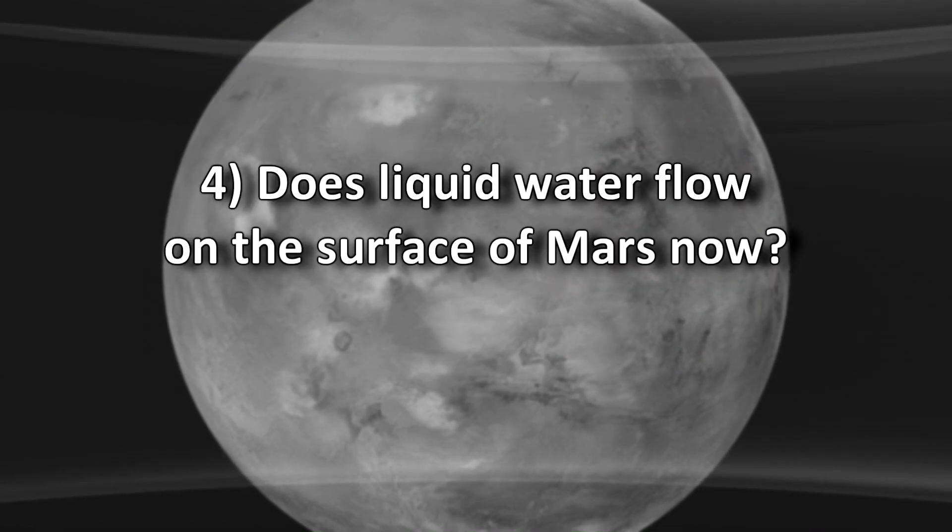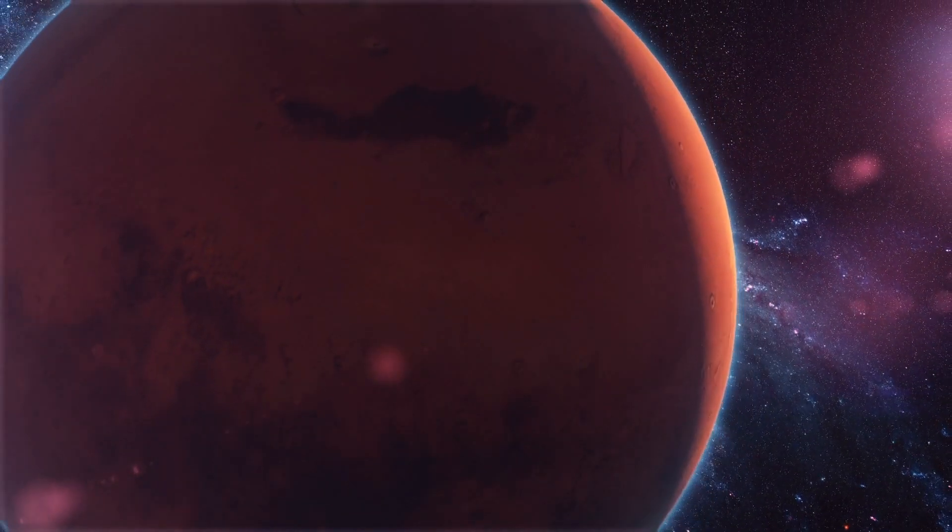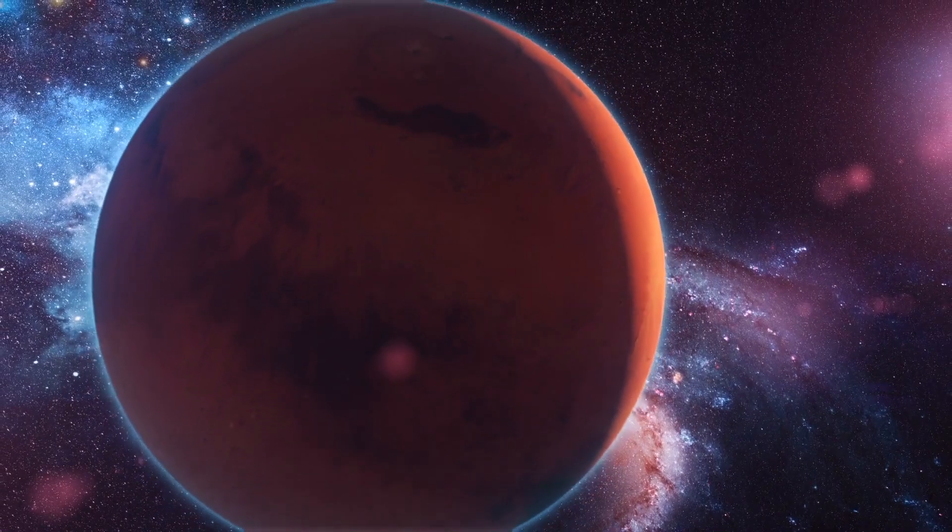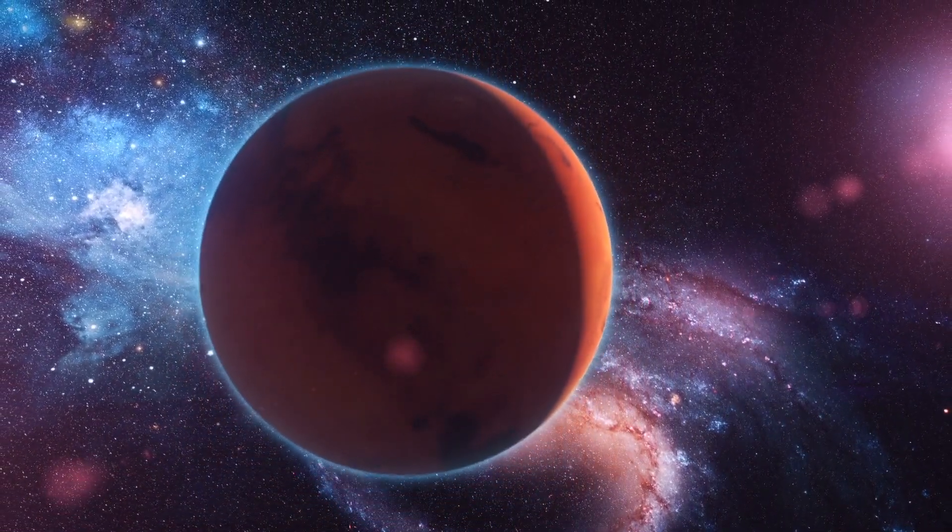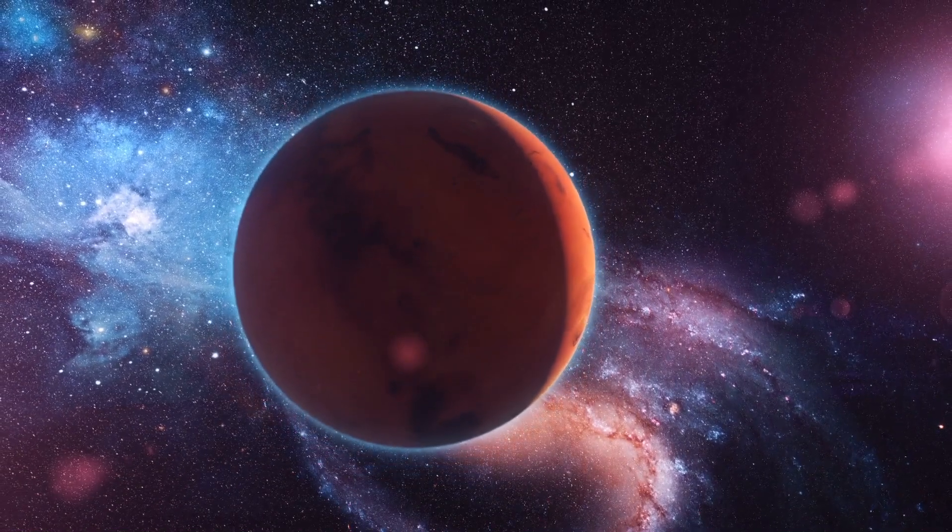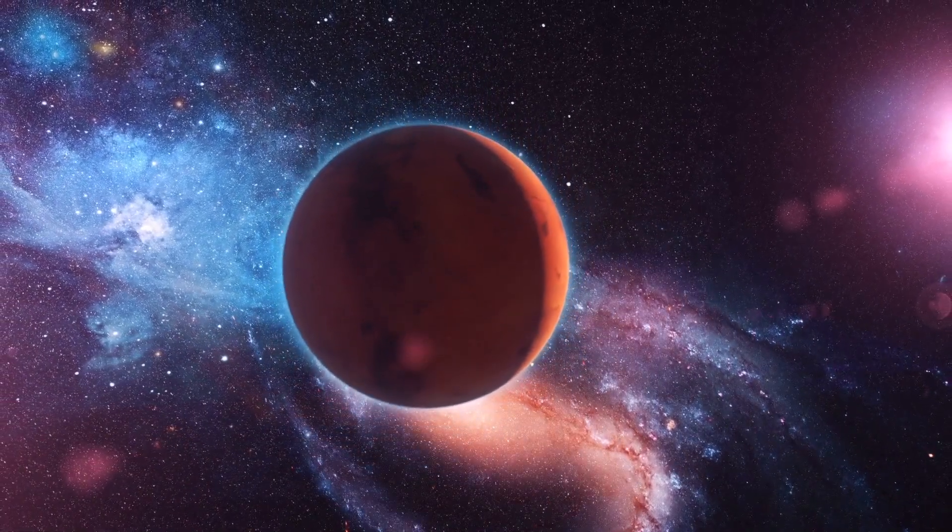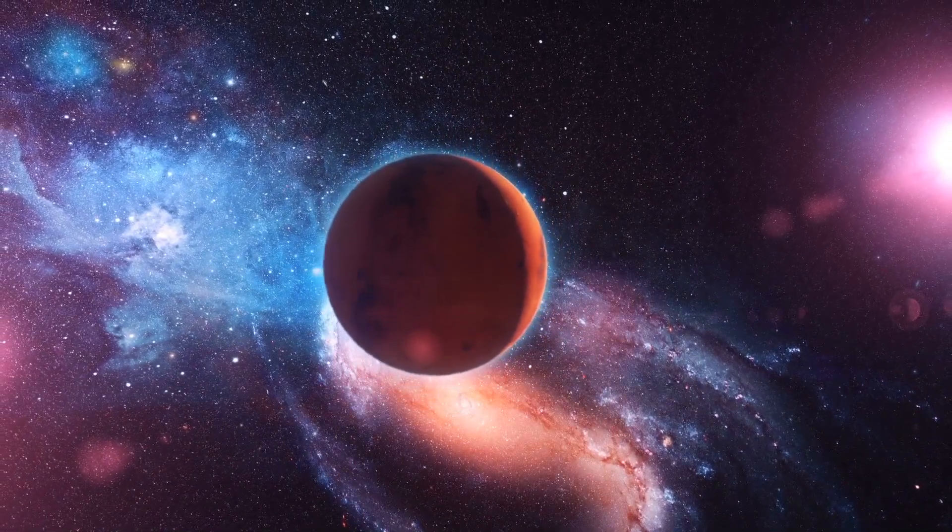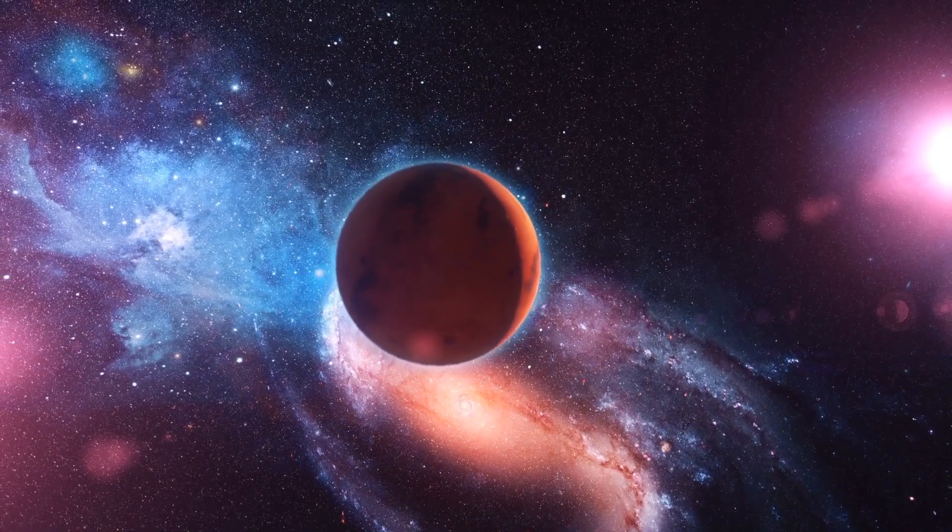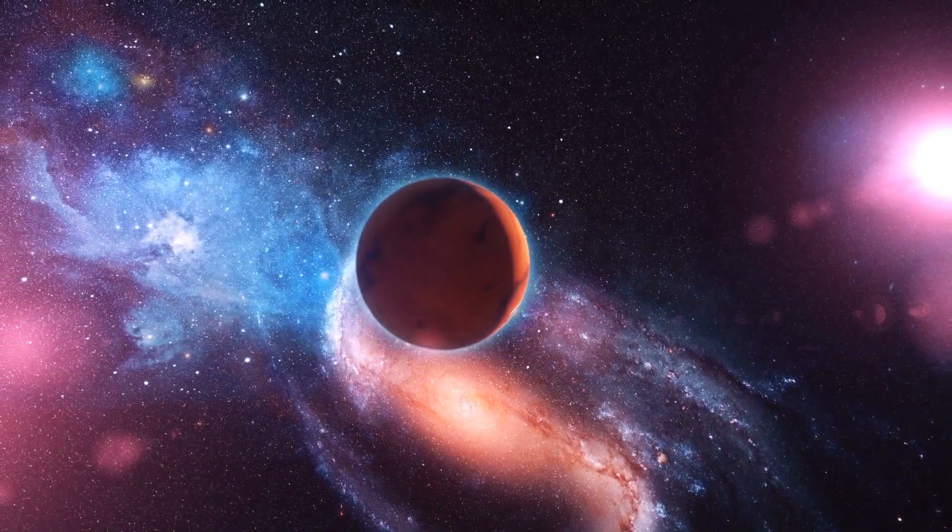Does liquid water flow on the surface of Mars now? A number of shreds of evidence suggest that liquid water once flowed on the surface of Mars. But, it is debatable if water still flows on its surface occasionally or not. Martian atmosphere pressure is quite low, about 1/100th of Earth's atmospheric pressure, rendering it impossible for water to last on the surface. However, dark lines seen on the planet's surface may hint that saltwater runs down them every spring.